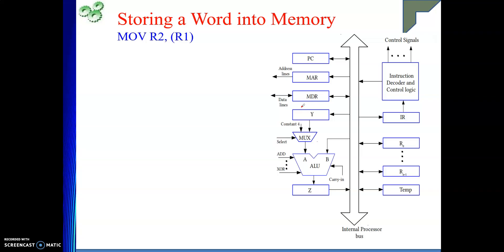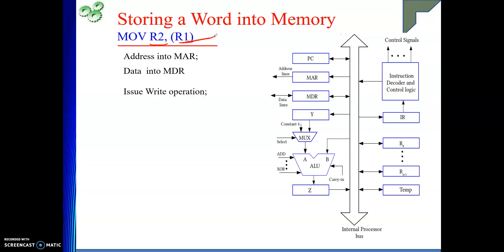The next operation is storing a word into memory. The instruction means: the content of R2 should be placed in a memory location whose address is in R1. You are sending something from the processor to memory. First, you need to set the address in MAR. Then you need to place the data in MDR. Only then issue the write signal. Do not issue the write operation right after giving the address — first set the data in MDR, then write.